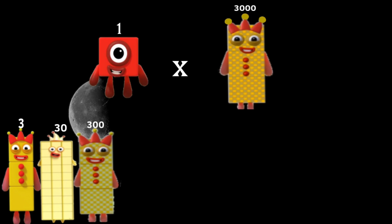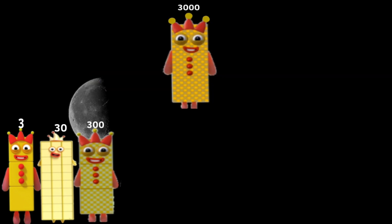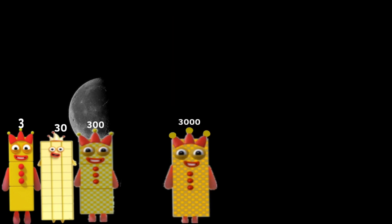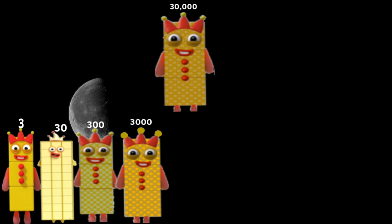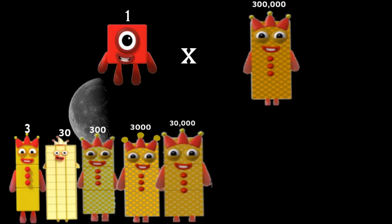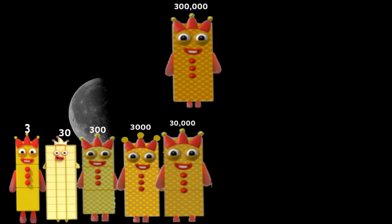1 times 3,000 equals 3,000. 1 times 30,000 equals 30,000. 1 times 300,000 equals 300,000.